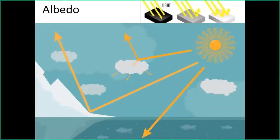Albedo is an important factor — it is more or less the reflection of light from a surface. If the surface is white, a lot is reflected. If the surface is black, the heat is taken up by the surface. So basically if you have clouds or snow, a lot of the heat is reflected into space. While if you have ocean, a lot of the heat is absorbed by the ocean.